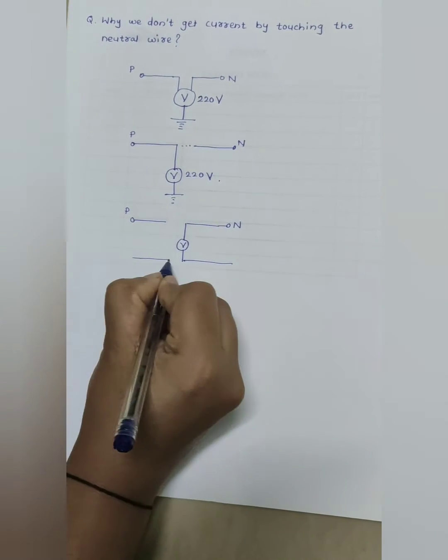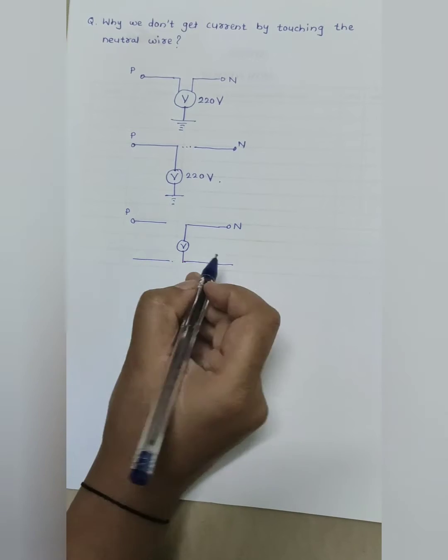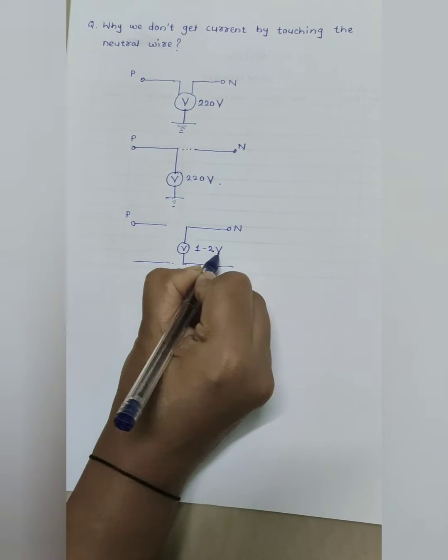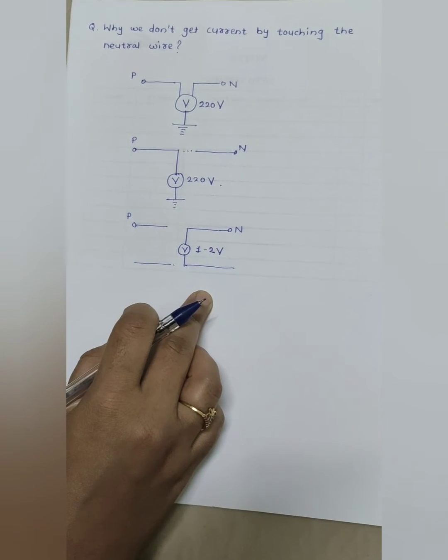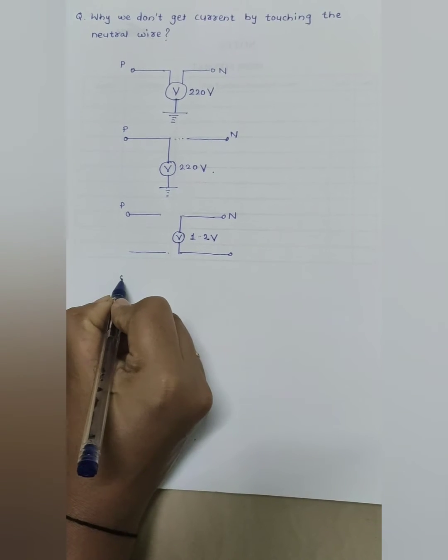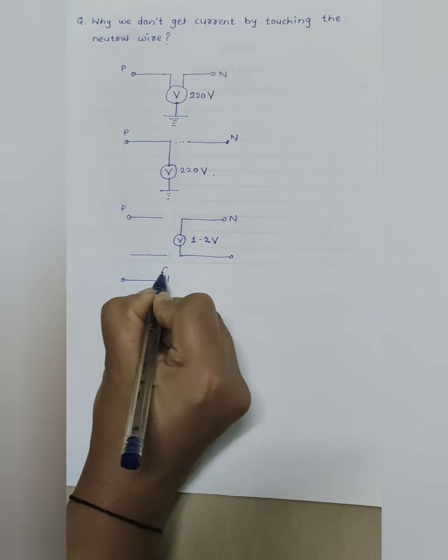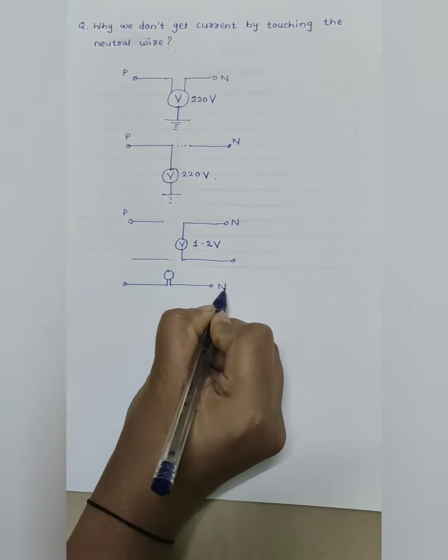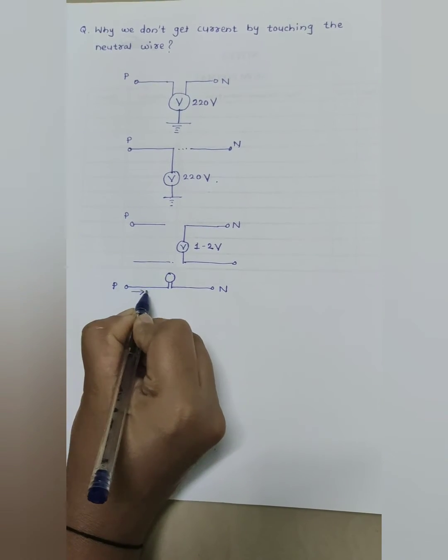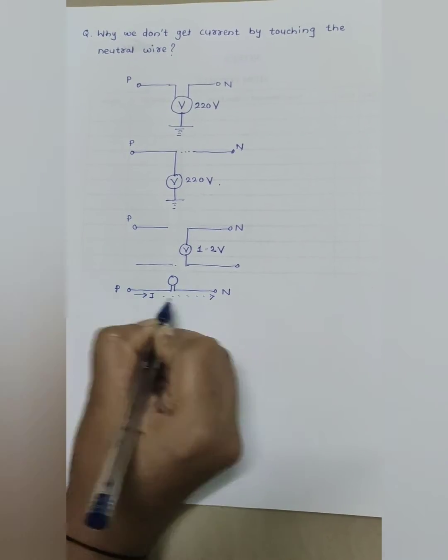Now we turn to our question. If any device is connected to the circuit, suppose here bulb is connected, then current flows through the circuit and bulb gets on.